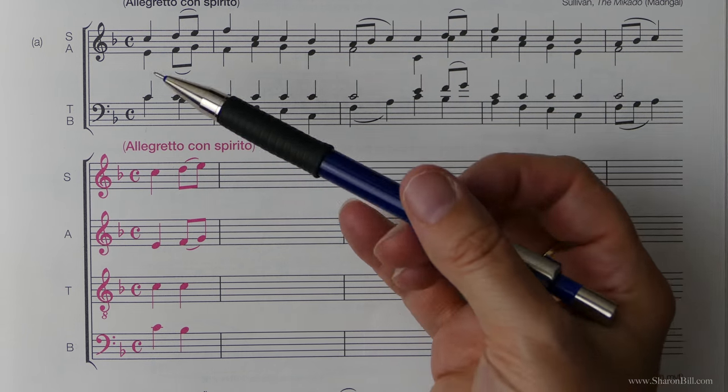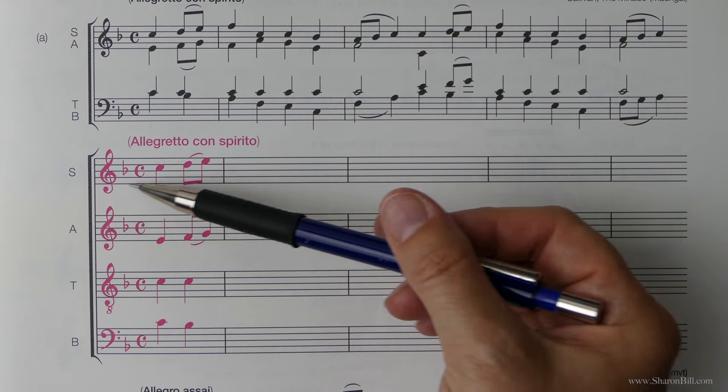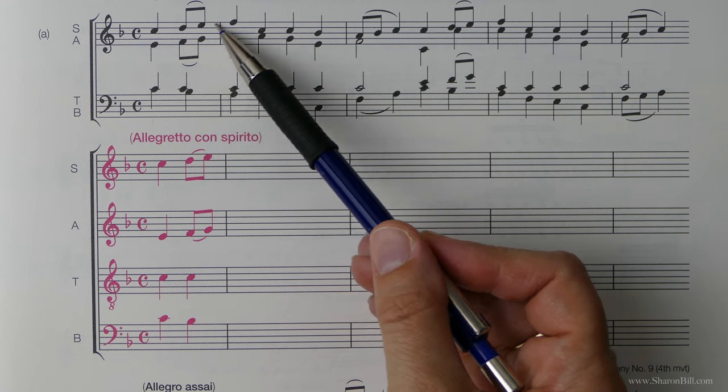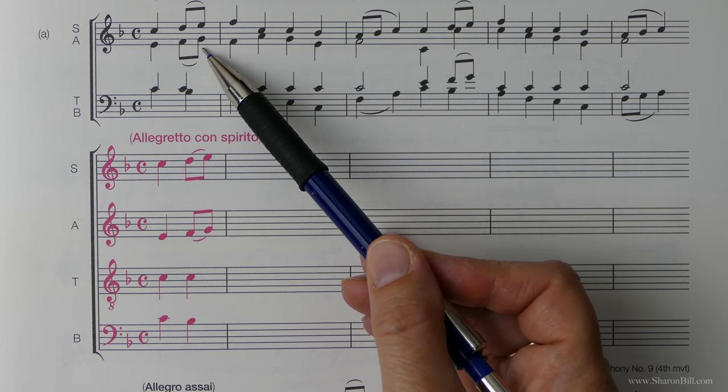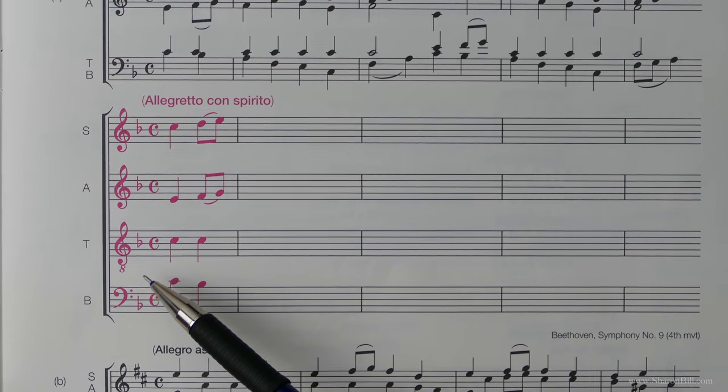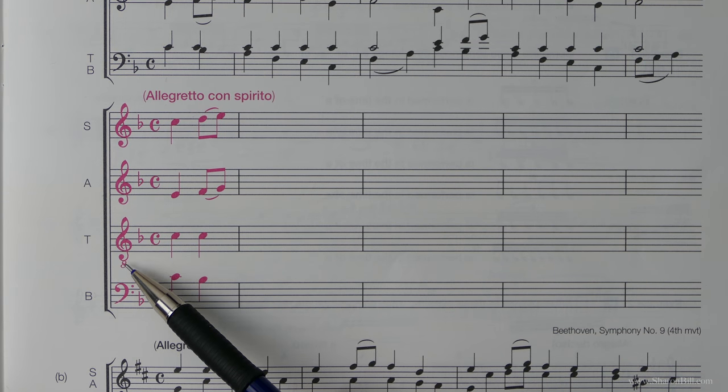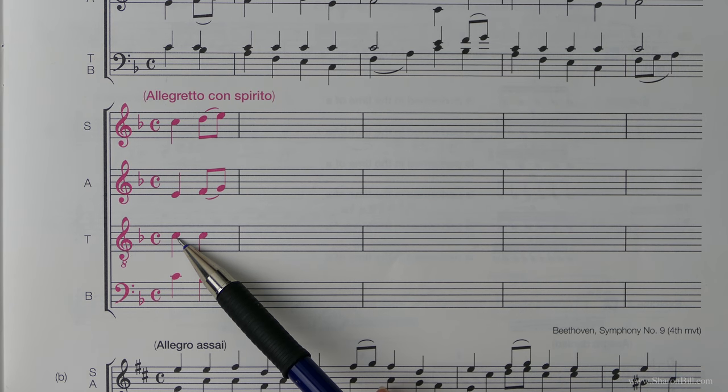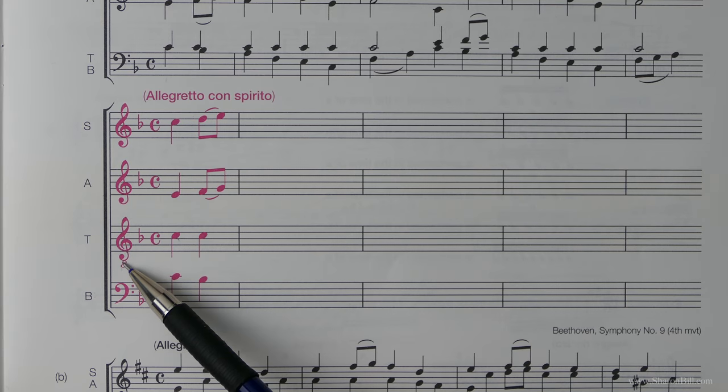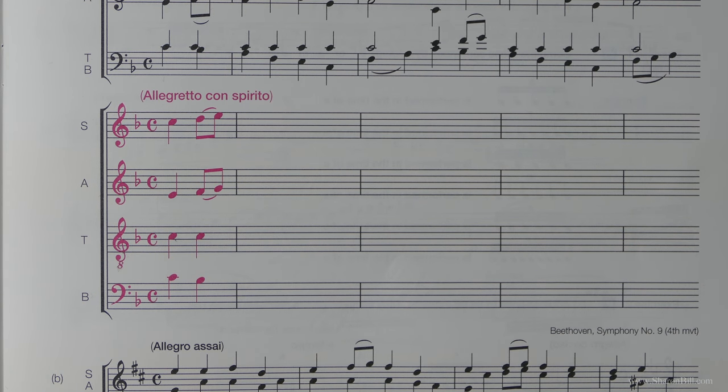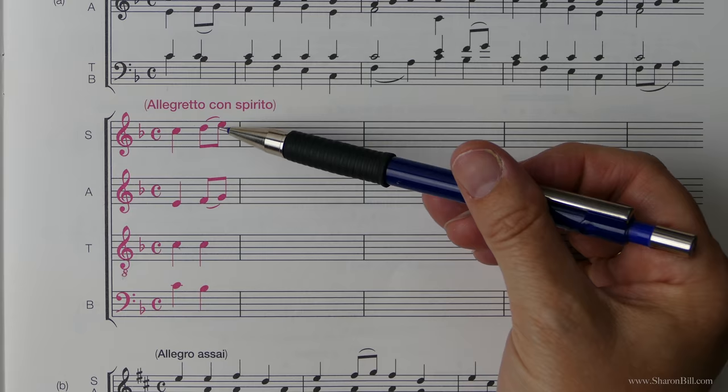You'll notice now that each voice part has its own stave, its own line. You're literally just copying the note heads exactly as each voice part says, except for the tenor line, which now is written in treble clef and transposed an octave higher than it's sung. That little number eight attached to the treble clef will tell us that.